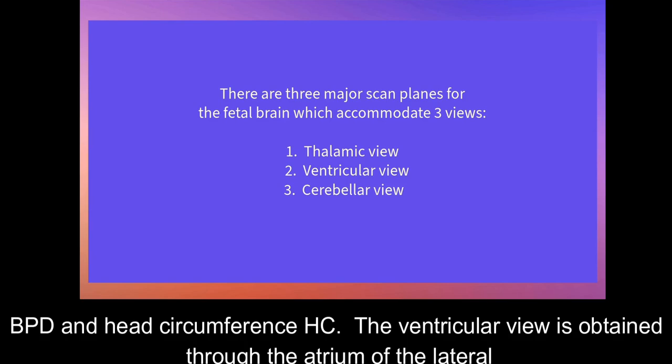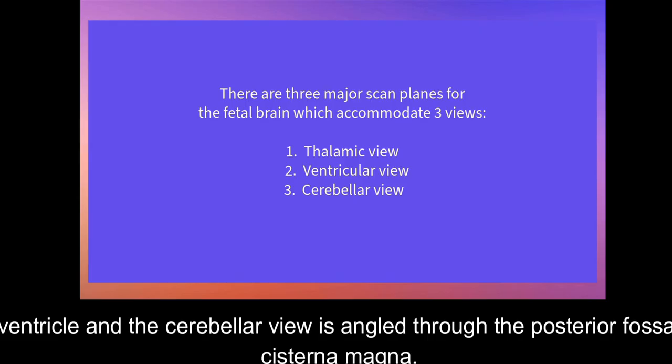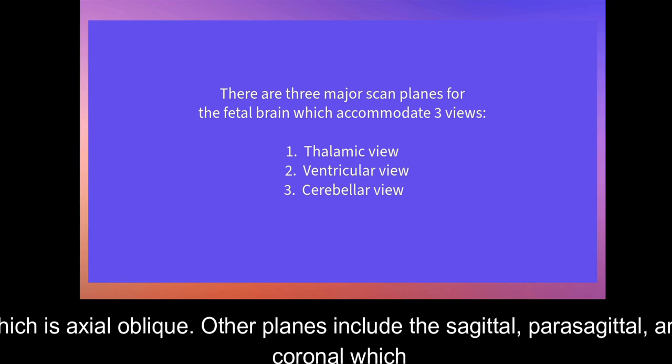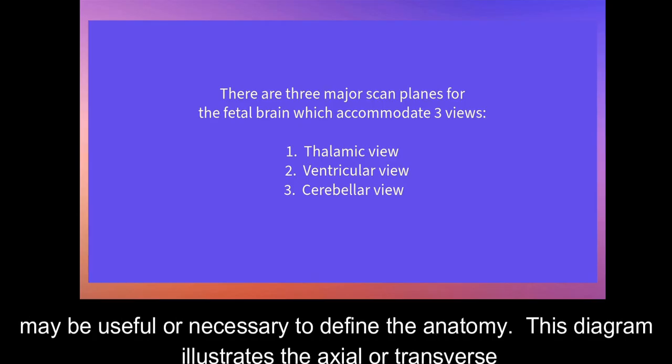The ventricular view is obtained through the atrium of the lateral ventricle, and the cerebellar view is angled through the posterior fossa, cisterna magna. All are axial, transverse views of the fetal head with the exception of the cerebellar view, which is axial oblique. Other planes include the sagittal, parasagittal, and coronal, which may be useful or necessary to define the anatomy.